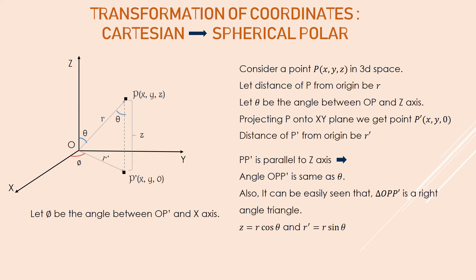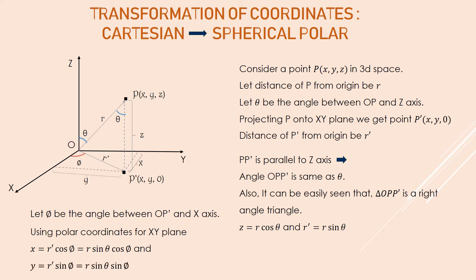Now let phi be the angle between OP' and the x-axis. With the help of phi and r', and using polar coordinates in the xy-plane, I can easily write x = r'·cos(phi). But we already have r' = r·sin(theta), so x becomes r·sin(theta)·cos(phi). Similarly, y = r'·sin(phi), which can be written as r·sin(theta)·sin(phi).